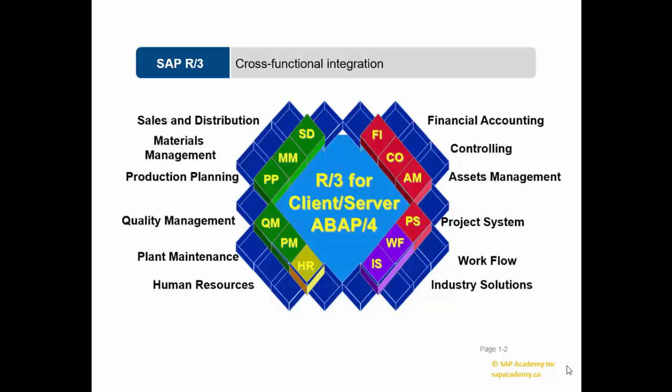Each user department in SAP terminology is referred to as a module, such as financial accounting or FI, controlling or CO, asset management or AM, project system or PS, sales and distribution or SD, materials management or MM, production planning or PP, quality management or QM, plant maintenance or PM, and so on. Organizational units for each module are either shared across all modules or unique to that particular module only.